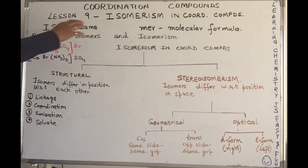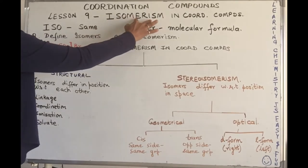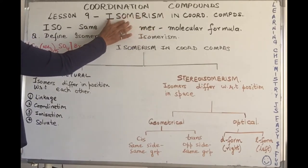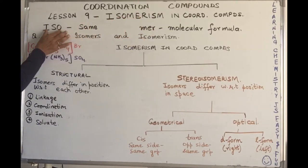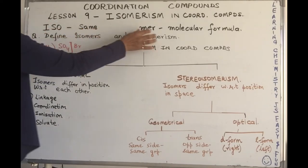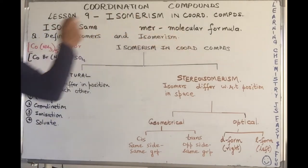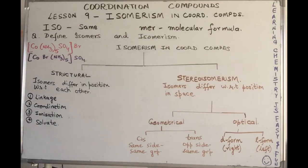What do you mean by the term isomers? As I've done here, I've split it: iso is same, same molecular formula. That means two compounds which have the same molecular formula but they differ in their physical and chemical behavior.